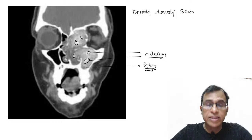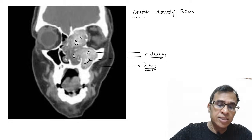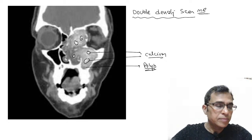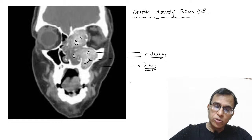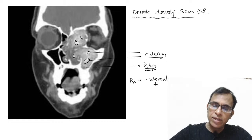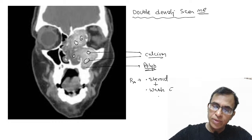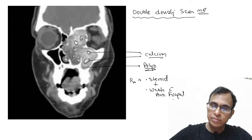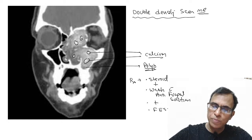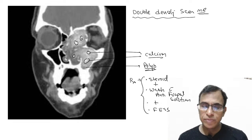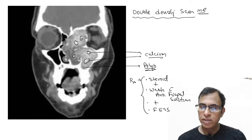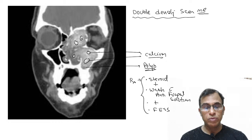Treatment of allergic fungal sinusitis has three components: first, give steroids (since it is allergy-driven); second, wash the nose with antifungal solution; and third, perform FESS — functional endoscopic sinus surgery — to remove the polypoid tissue with calcium deposits.